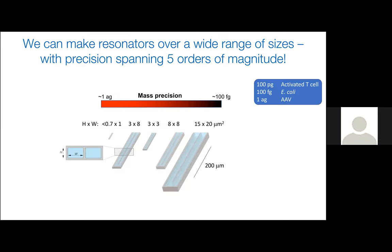Over the years, my lab has made these devices at a wide range of sizes. The reason we do this is that the mass precision is directly related to the mass of the device itself. So the lighter the device is, the smaller the mass that we can resolve. By doing this, we've been able to span about five orders of magnitude in terms of precision, from our biggest one to our smallest one. These 15 by 20s we use for mammalian cells can resolve about 100 femtograms or 0.1 picogram. An activated T cell weighs almost 100 picograms. E. coli weighs several hundred femtograms. For viruses, we're really thinking about these smaller devices that have resolution on the attogram scale.